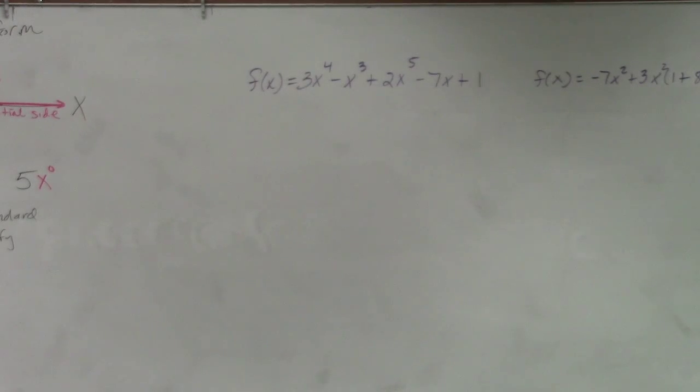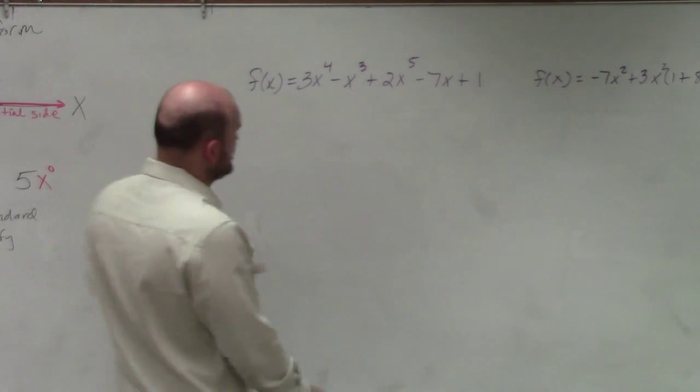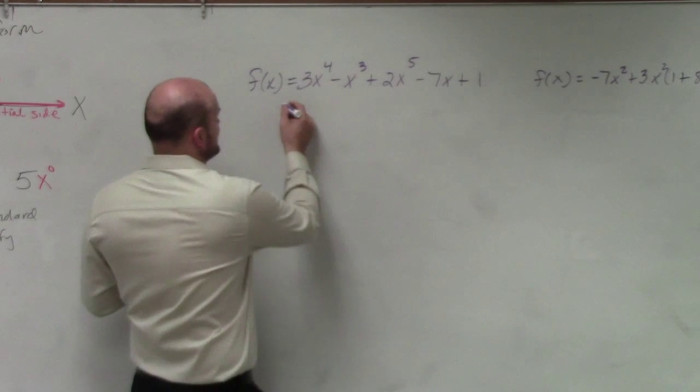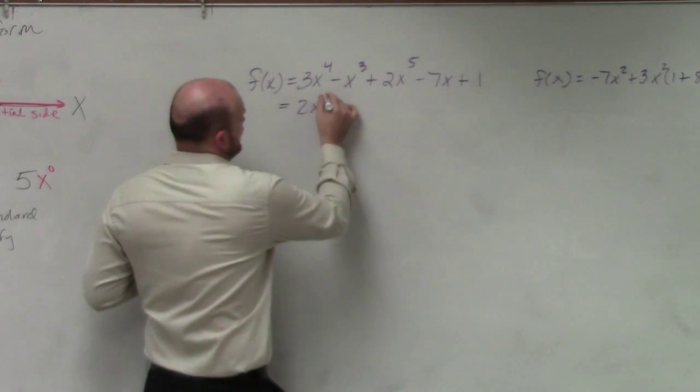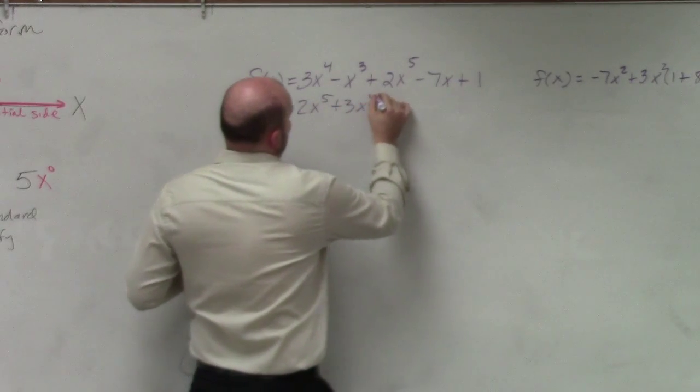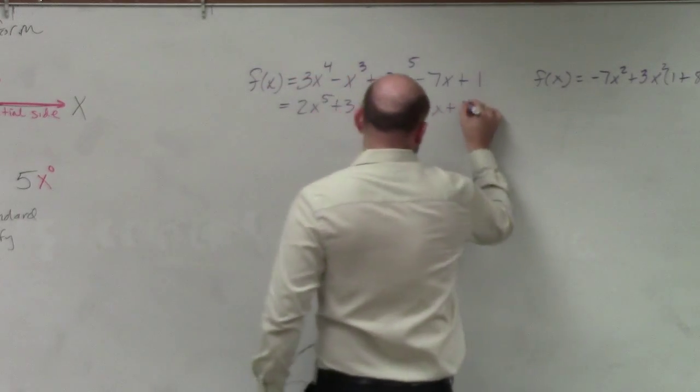Make sure I have enough time to go over your test. So in this example, ladies and gentlemen, again, the first thing we want to do is write it in standard form. So I have 2x to the fifth plus 3x to the fourth minus x cubed minus 7x plus 1.